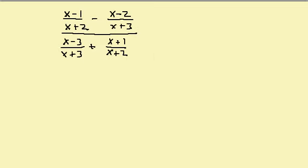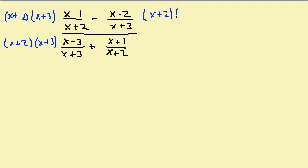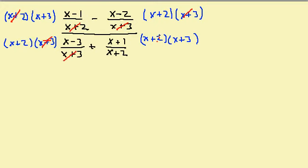All right, let's take a look at this one. We want to get a common denominator of (x+2), (x+3), (x+3), and (x+2). The common denominator is (x+2)(x+3). So I'm going to multiply each term by the common denominator. Here the (x+2)'s cancel, here the (x+3)'s cancel, here the (x+3)'s cancel, and here the (x+2)'s cancel.